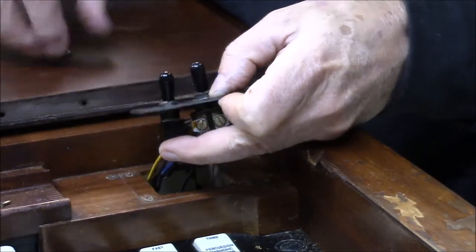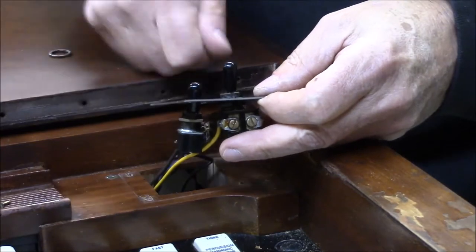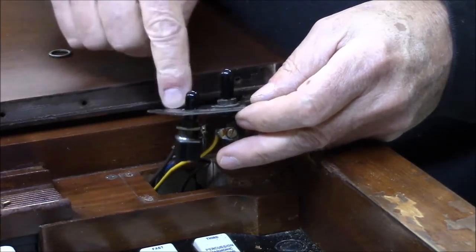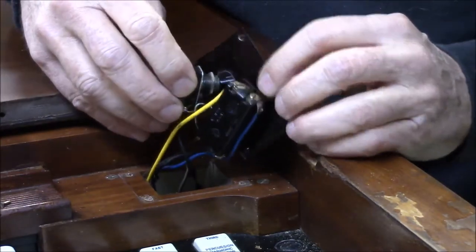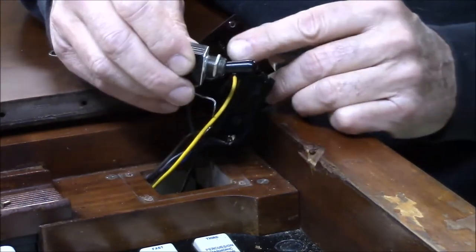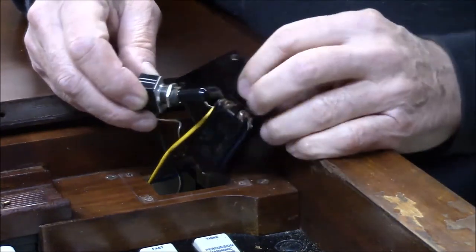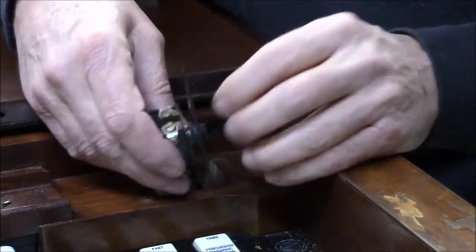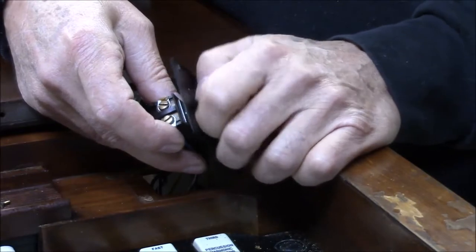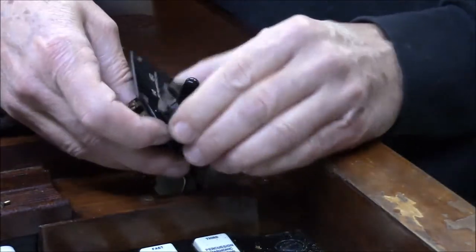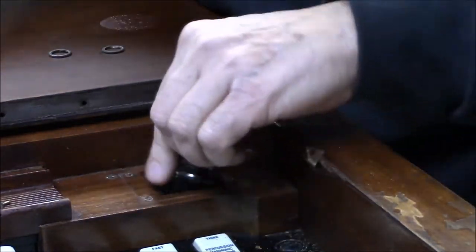It's always a good idea to first loosen the hex nut on the bottom so that way you don't run the risk of marring the plate with a pair of pliers. That nut can be adjusted to make the switch stick out of the top the amount that you want it to. Obviously, this has been loosened prior to me filming this, so it's a matter of taking it apart and then you can just push the switches through the hole in your music rack.